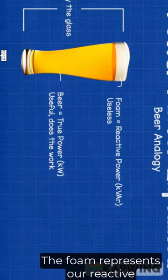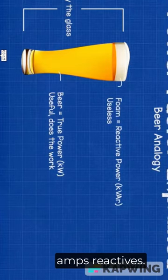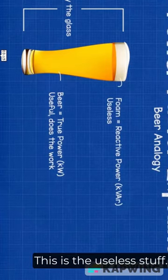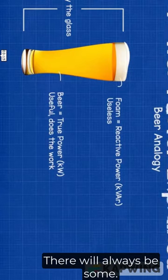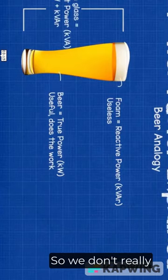The foam represents our reactive power, or our kVar, kilovolt amps reactive. This is the useless stuff. There will always be some, we have to pay for it, we can't use it, so we don't really want much of it.